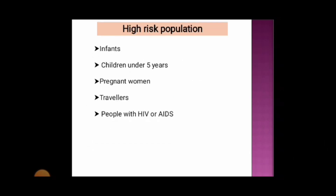High-risk populations include infants, children under 5 years, pregnant women, travelers, and people with HIV or AIDS who have a weakened immune system. These groups are at high risk of severe infection.